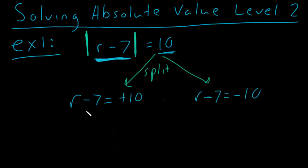So what gets rid of this minus 7? Well, plus 7, plus 7. That zeroes out. We get r equals 10 plus 7, which is 17.